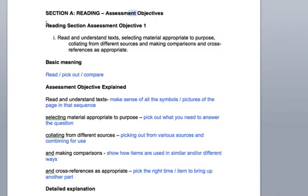So the very first objective then is to read and understand texts, select material as appropriate to purpose, collating from different sources and making comparisons and cross-references as appropriate. The basic meaning of the whole thing is you have to have the ability to read, and that doesn't just mean read the letters and words, it means read the punctuation and also read pictures and understand what they're referring to as well. You have to be able to pick things out, the most appropriate things, and you need to be able to compare different items at different times.